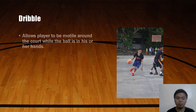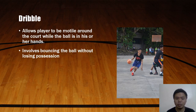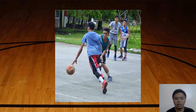First is Dribble. Dribbling allows a player to be mobile around the court while the ball is in his or her hand. It involves bouncing the ball without losing possession, so a player must develop his or her ball-handling skills. Here is an example of a player using their dominant hand to go through a defender with juggling moves.